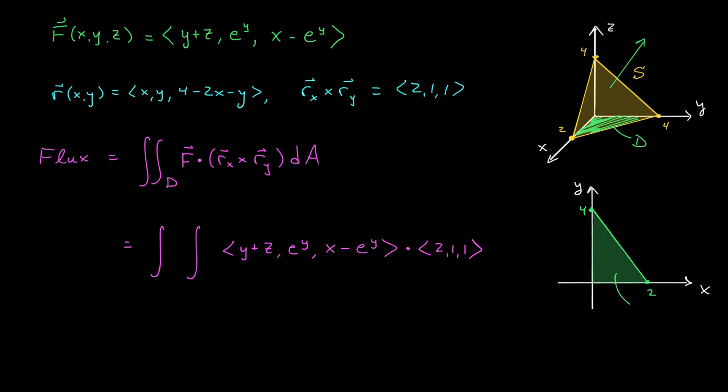It's not too hard to see that this equation, by the way, is y equals 4 minus 2x. So we can set this up as a region of type 1. y goes from 0 to 4 minus 2x, and x goes from 0 to 2. At the end of the integral, we have dy dx.